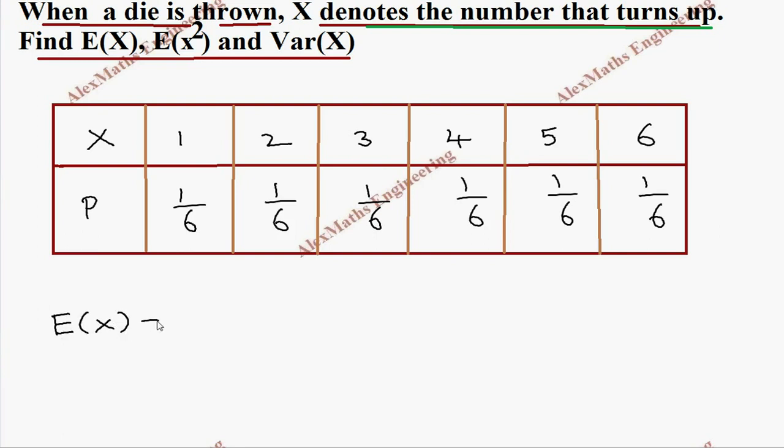E(X), formula is sigma xi pi. So we have to multiply X with the corresponding probability. So 1 is X and its probability is 1 by 6. In the same way, 2 into 1 by 6. Then again, next value 3 and its probability is 1 by 6.